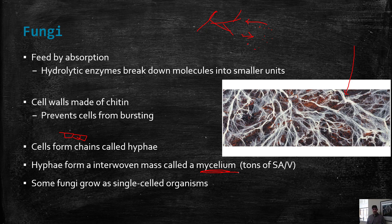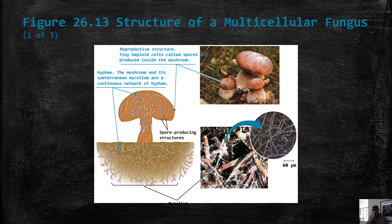There are some fungi, especially yeast like we use in lab, which are single-celled organisms. So not all fungi form hyphae, but most of them do. A mushroom is just the reproductive part of a fungus, and not all fungi make mushrooms — only specific kinds do.